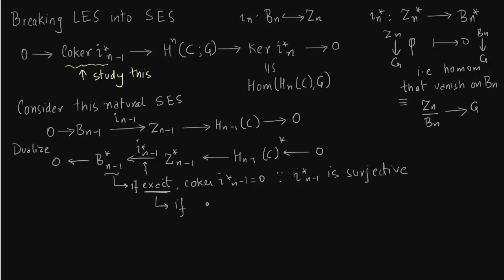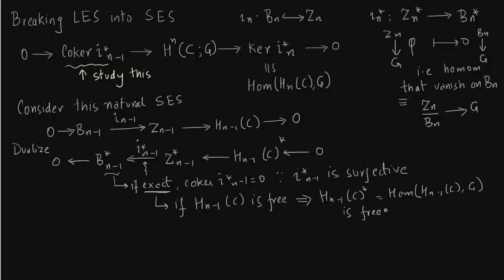Under what circumstances is the dual chain exact? The simplest case is if HN minus 1 of C is free, then the short exact sequence 0 to BN minus 1 to ZN minus 1 to HN minus 1 of C to 0 splits. That would imply the dual sequence is also split. If HN minus 1 of C is free, its dual is also free — though you may want to verify this. If the first sequence splits, then taking its dual also splits, because the homomorphism from A direct sum B to G is nothing but homomorphisms from A plus homomorphisms from B to G.